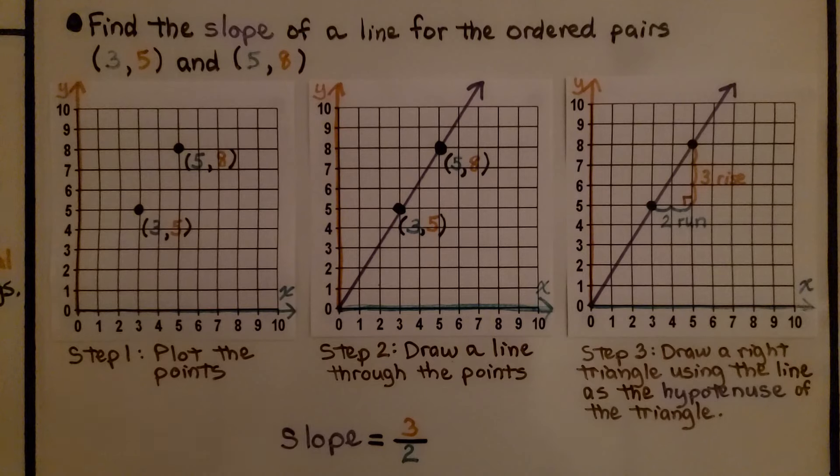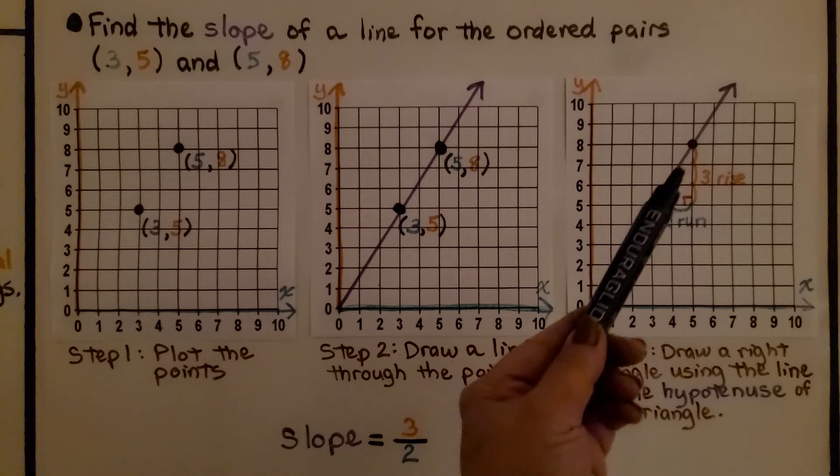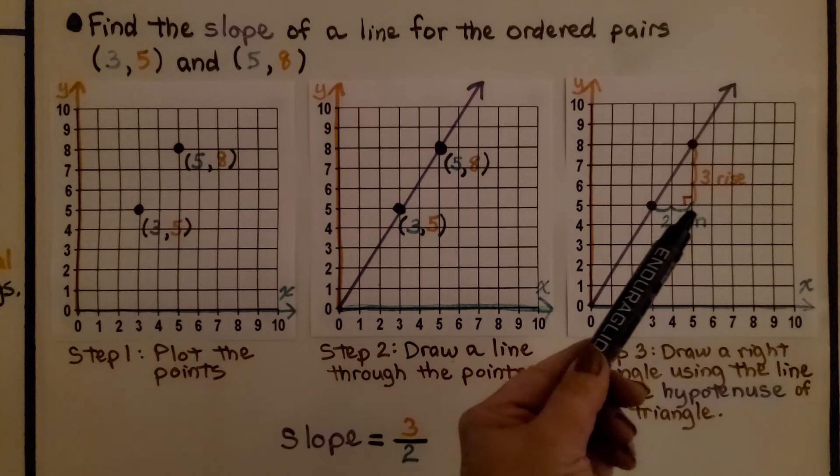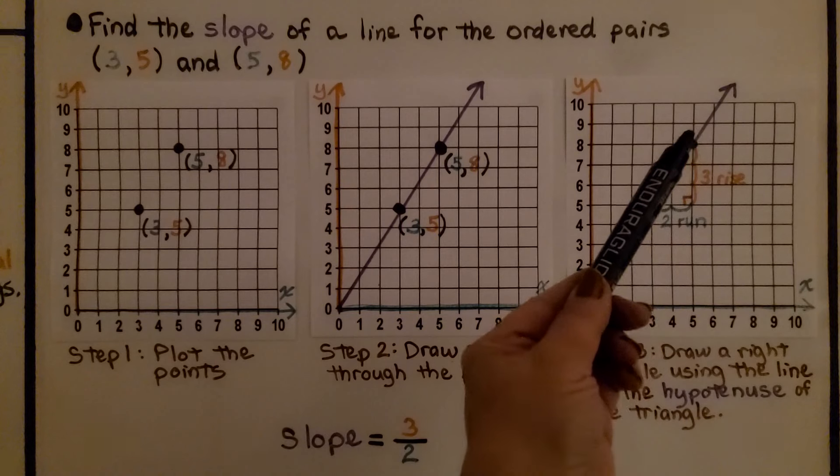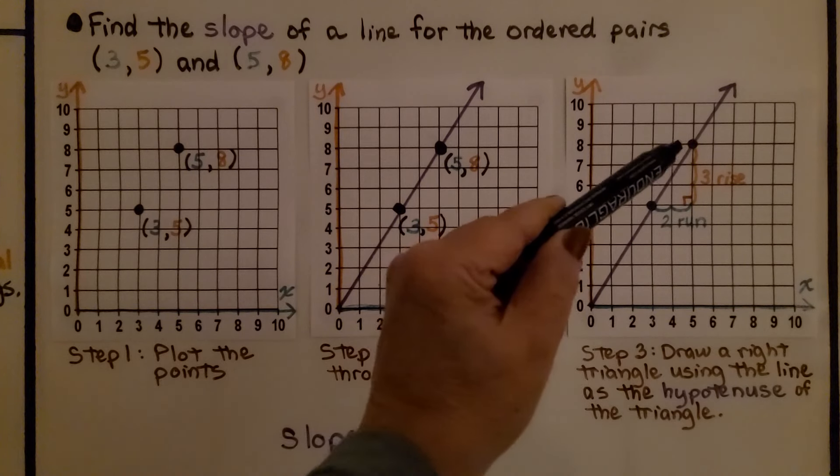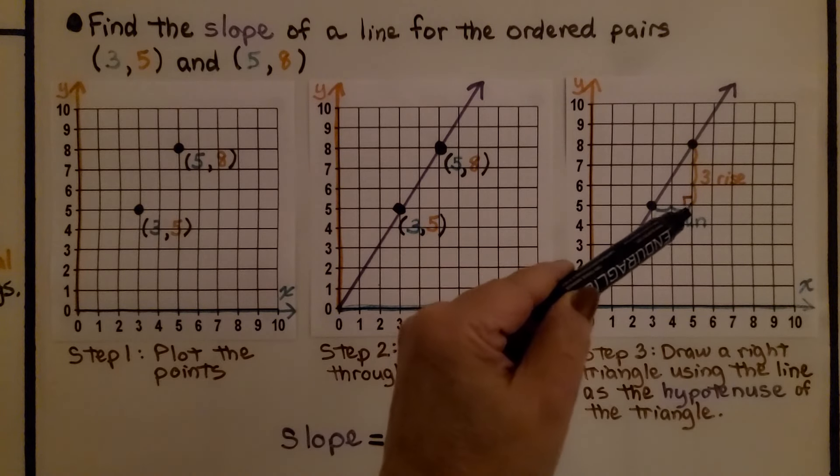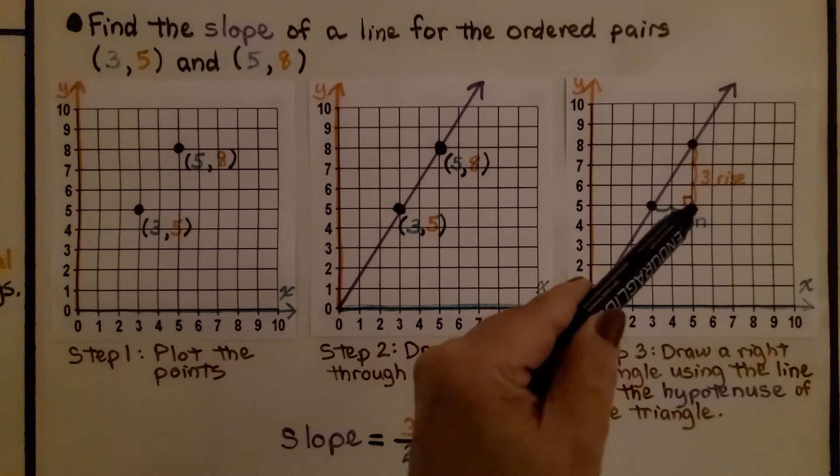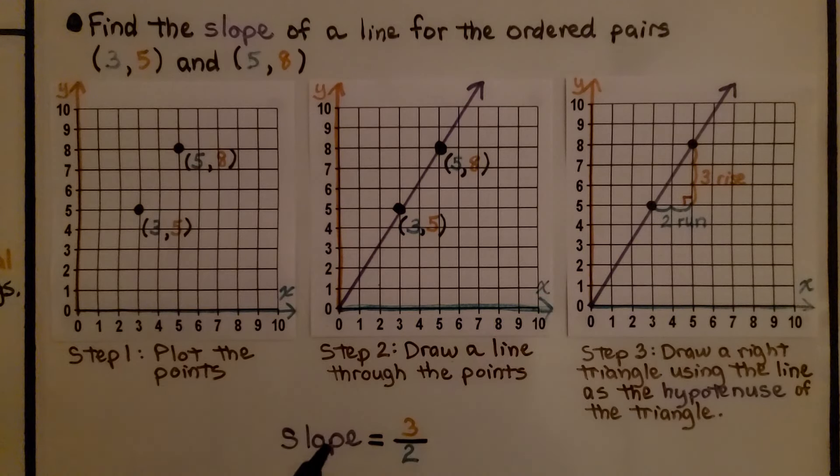Step three, we draw a right triangle using the line as the hypotenuse of the triangle. So we go across until we get to the grid line for this point, and we go up, and we count the units. We have 1, 2, 3 for the rise, and 1, 2 for the run. We know our slope is 3 over 2 as the rise to the run.